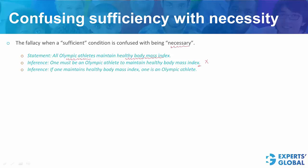Look at one more example. Can this be inferred? Once again, no. Maintaining a healthy body mass index is something that Olympic athletes do, but it is not that only Olympic athletes do so. So this inference is also incorrect.